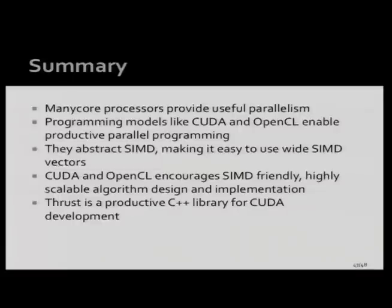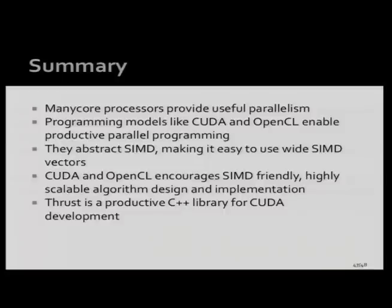In summary: many-core processors provide useful parallelism with great performance for those who have used them, and the programming effort has been reasonable. Programming models like CUDA and OpenCL allow us to use these many-core processors in a heterogeneous environment — they help with SIMD, encourage scalable algorithms, and check out Thrust as a great way to start CUDA programming. If you're just getting started, you'll be much more productive. Any questions?